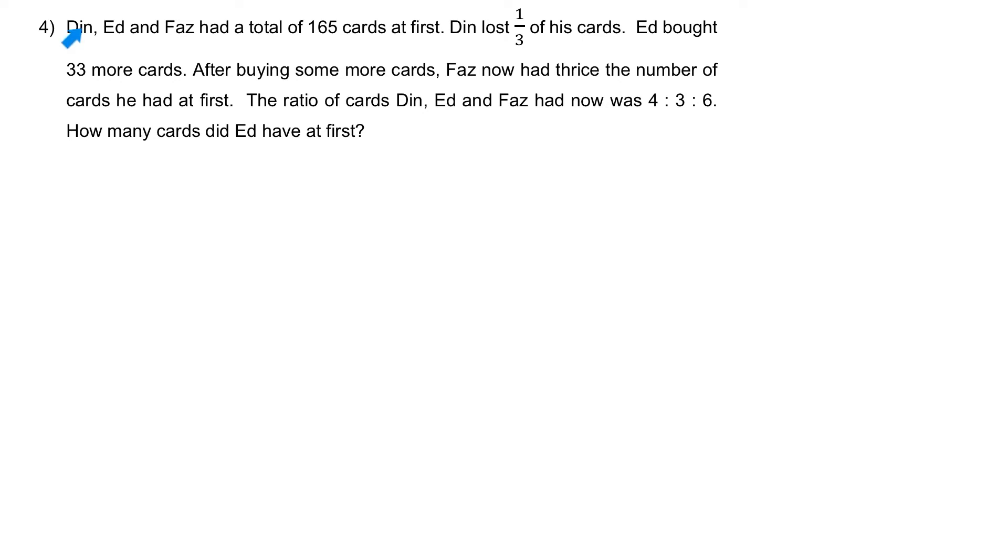Question 4, Dean, Ed, and Fuzz had a total of 165 cards at first. Dean lost a third of his cards. Ed bought 33 more cards. After buying some more cards, Fuzz now had thrice the number of cards he had at first. The ratio of the cards Dean, Ed, and Fuzz had now was 4 is to 3 is to 6. How many cards did Ed have at first?